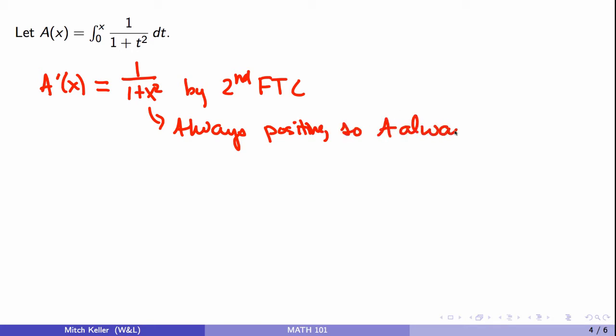A double prime of x is negative 1 over (1 plus x squared) squared times 2x.